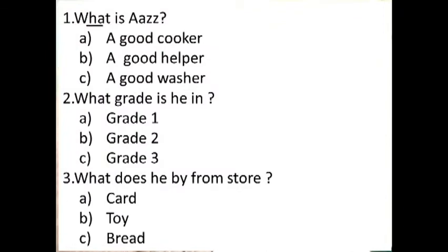Now, listen to the question. The first question is: What is Oz? A. Good cook. B. A good helper. C. A good washer.